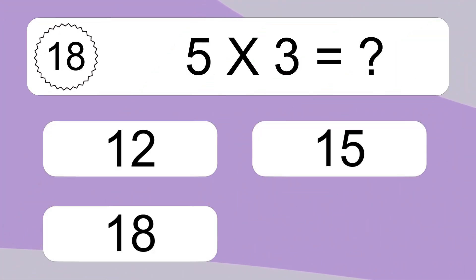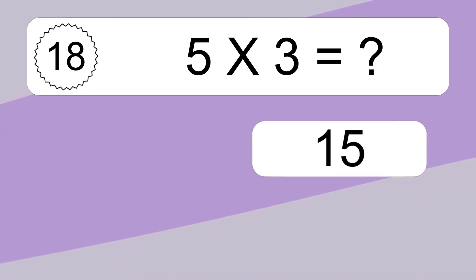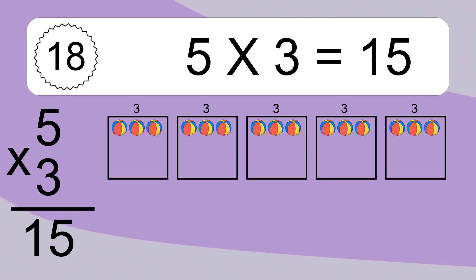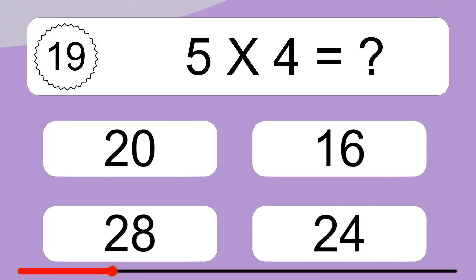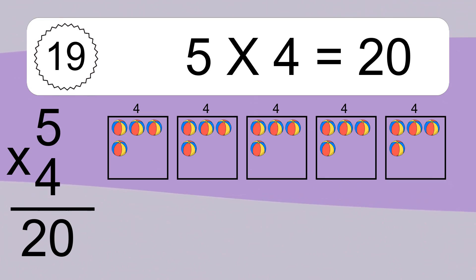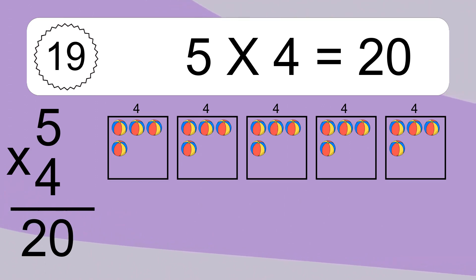Five times three equals what? Five times three equals fifteen. We have five boxes, and each box has three colorful balls inside. If you count all the balls in all the boxes together, you will have five times three balls. This equals fifteen balls.